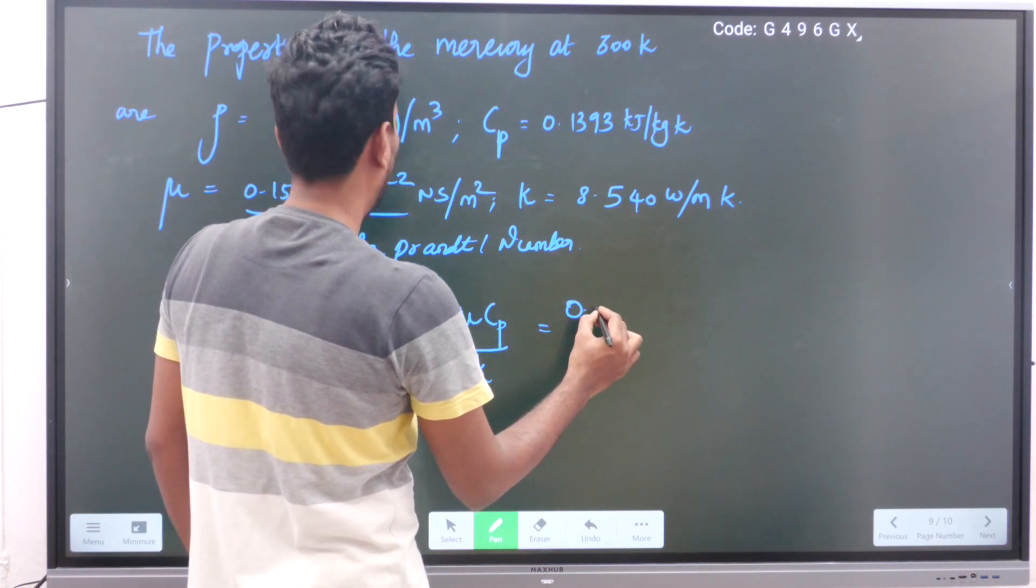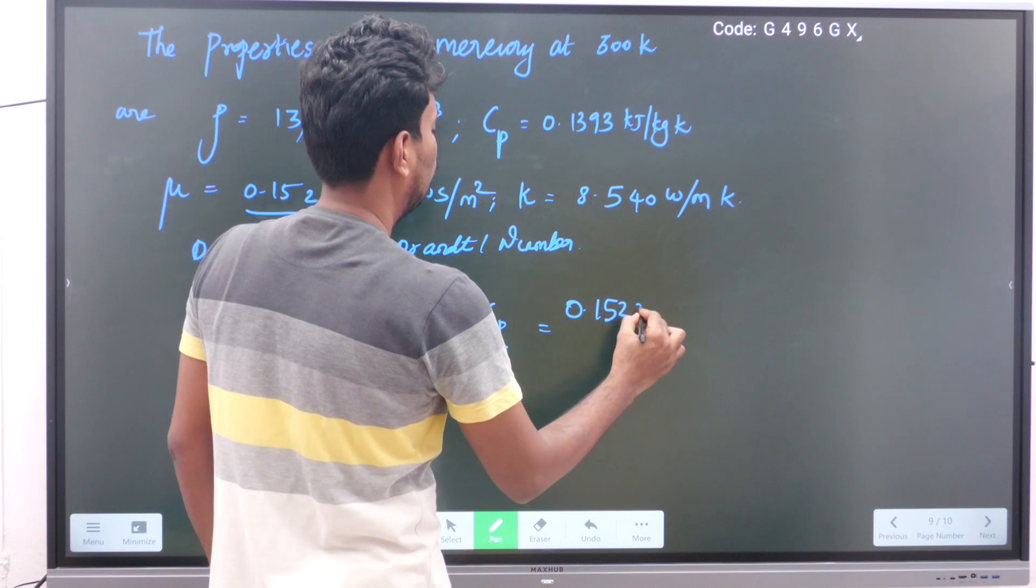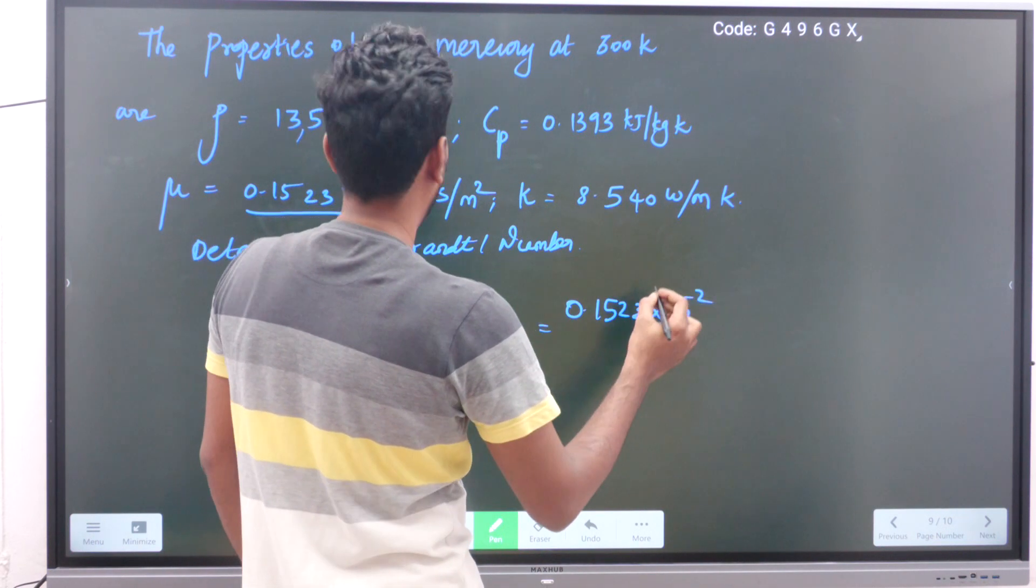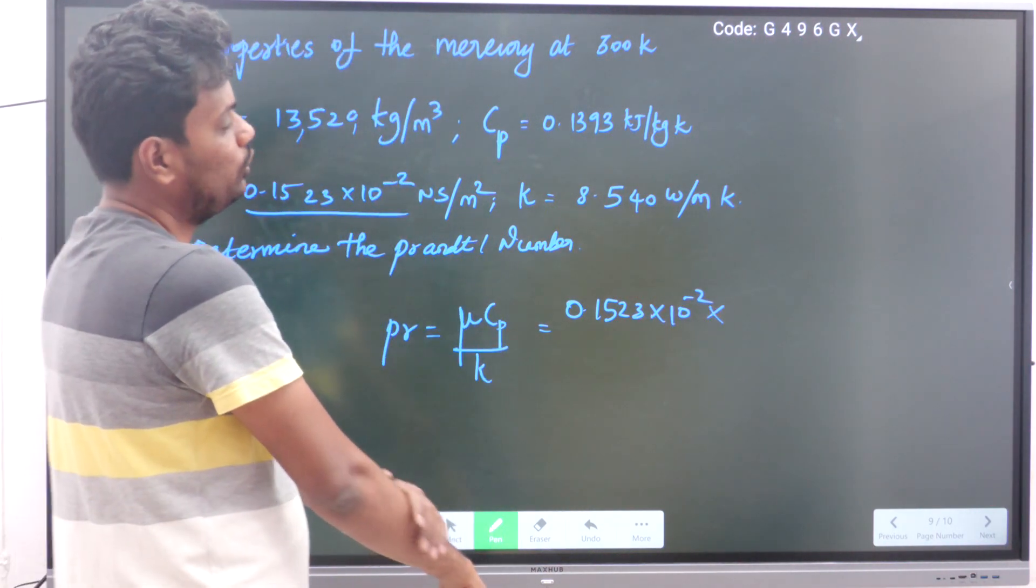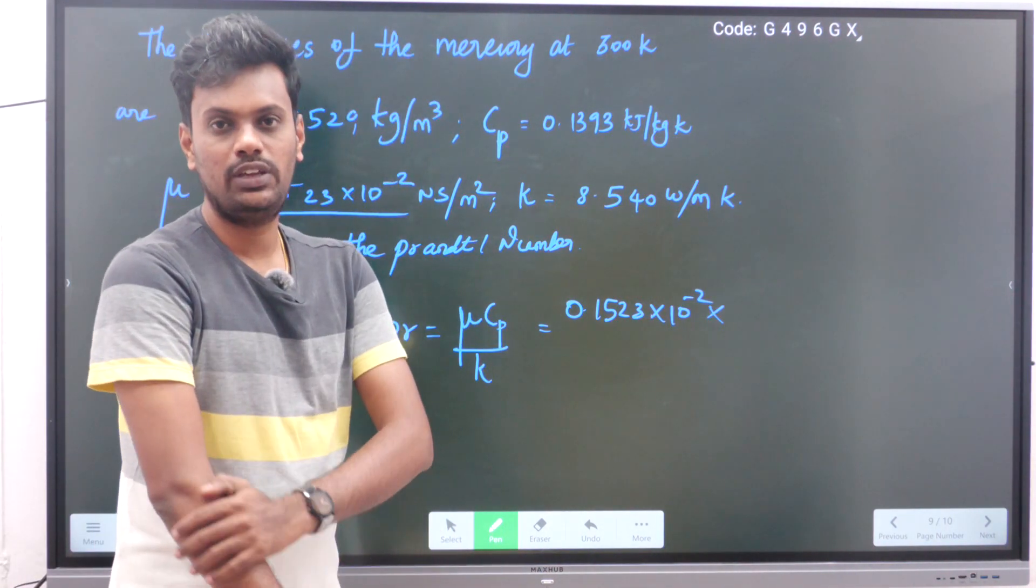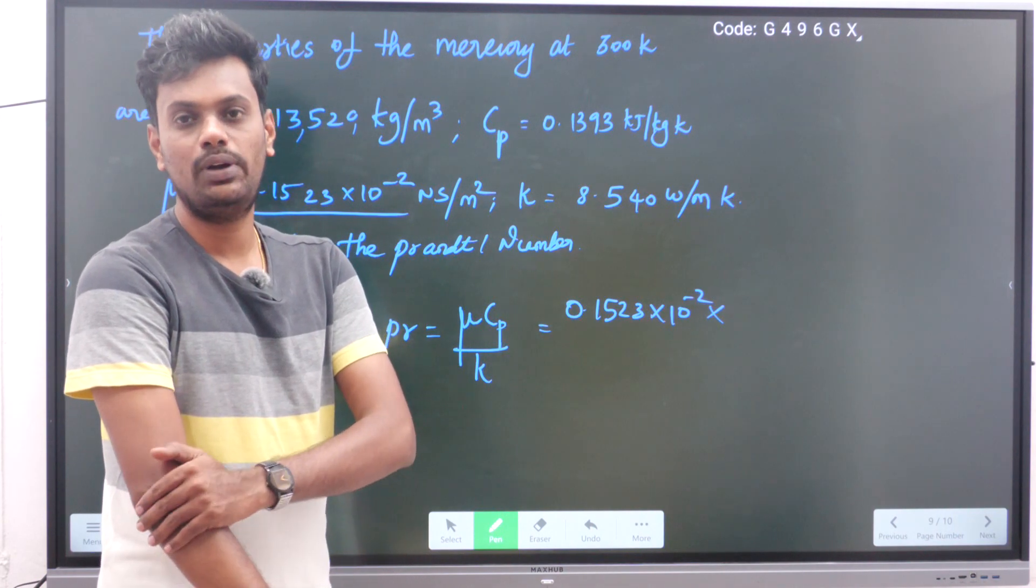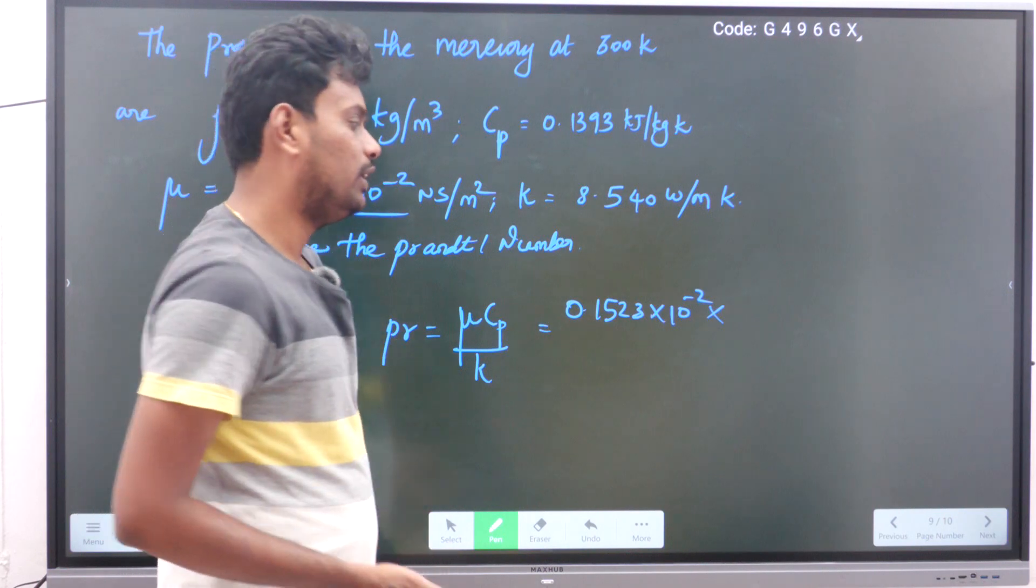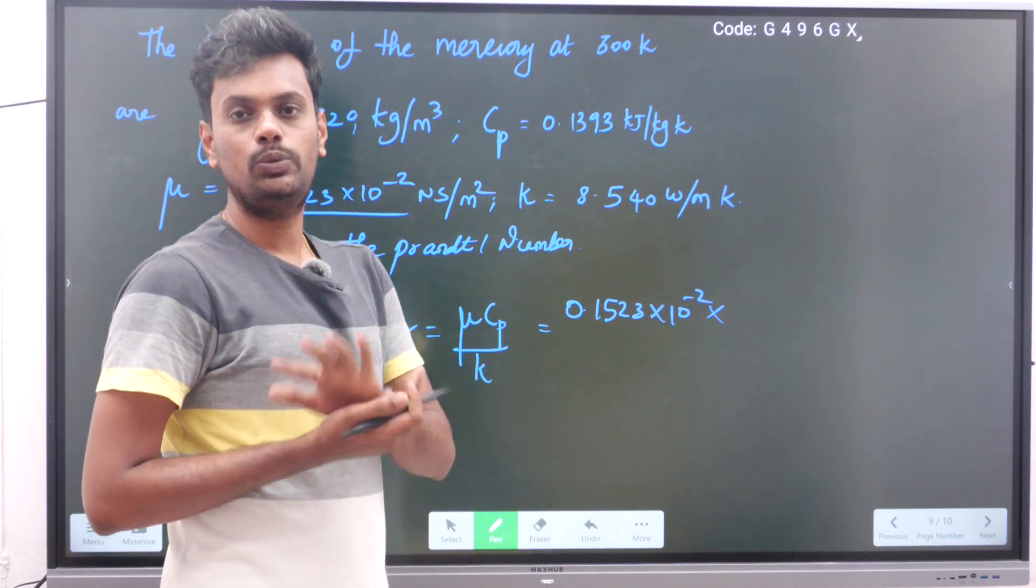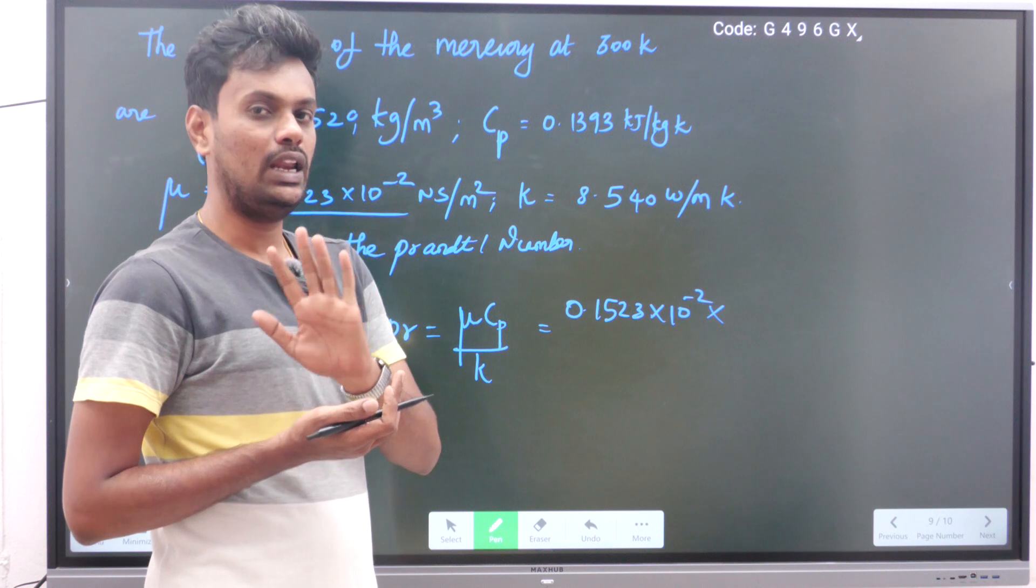Times cp value. You should remember always the specific heat should be in the unit of joules per kilogram Kelvin. Here they are given in kilojoules, so you just multiply that with 1000. If they give the cp value in joules per kilogram Kelvin you take that directly.